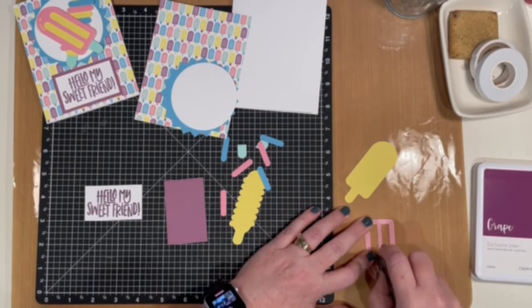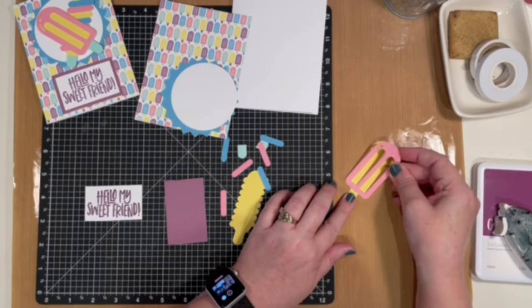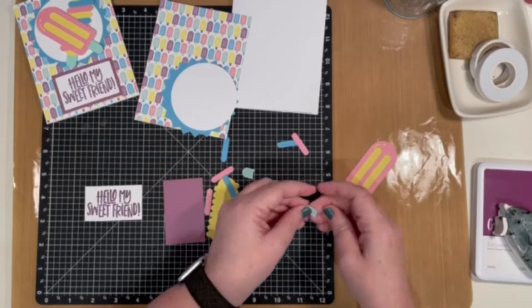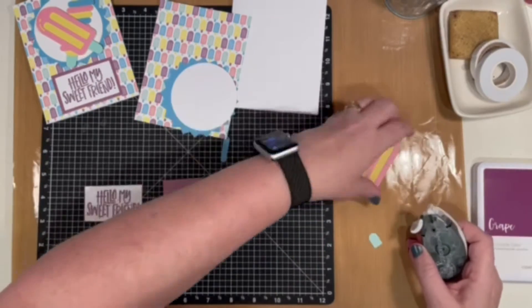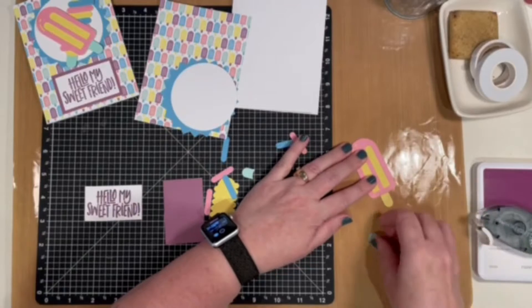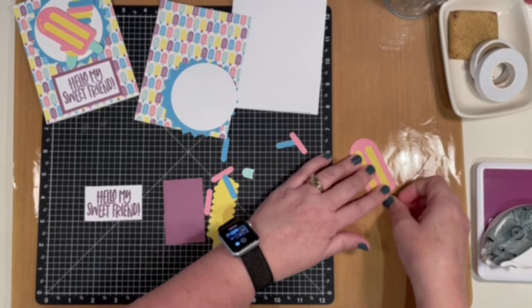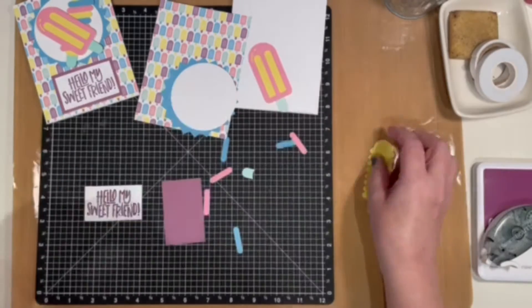To put the two different popsicles together, let's start with this first one. Put the flamingo piece on, and then you have a little piece of mint cardstock in your kit for the handle of the popsicle.